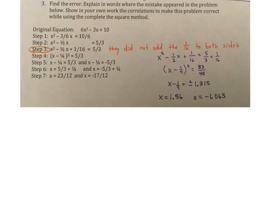All right, find the error. Explain in words where the mistake appeared in the problem below. Show in your own work the corrections to make this problem correct while using the complete the square method. Okay, so this, use completing the square. As you're looking through the problem, where there was a mistake was right here in step three, because they did the next step, which was adding this one, but they didn't add it to this side. Because again, in algebra, the rule is always what you do to one side, you got to do to the other. So that's why I said they did not add the 1/16 to both sides.